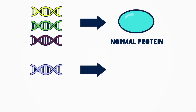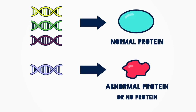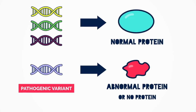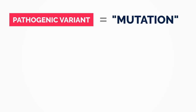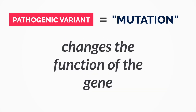If this version of the gene creates a different end product, it's called pathogenic. The word mutation refers to a pathogenic variant because it changes the function of the gene, which can go on to cause disease or differences.